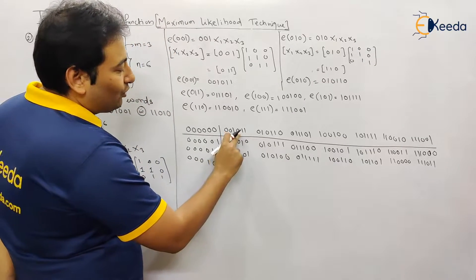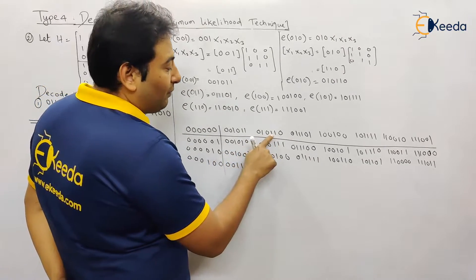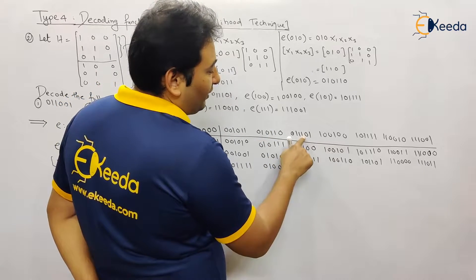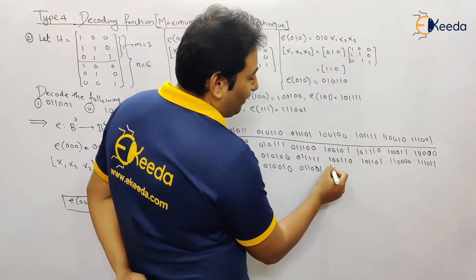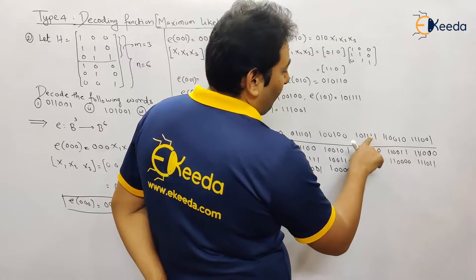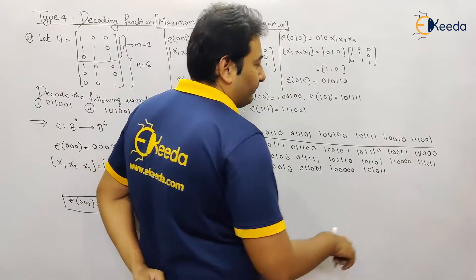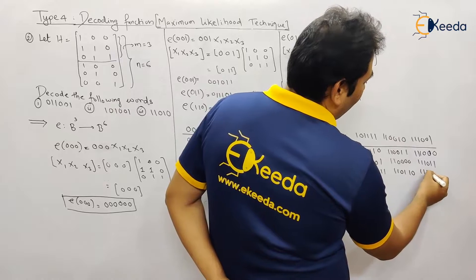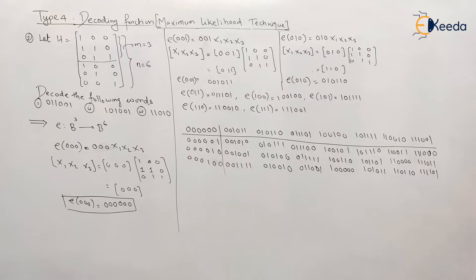Only the third bit will change now. This zero becomes one. Next, this one becomes zero. Then one becomes zero, one becomes zero, one becomes zero, zero becomes one, zero becomes one. Now let us check — we find 011001 in the table. We found the first word in the given table.